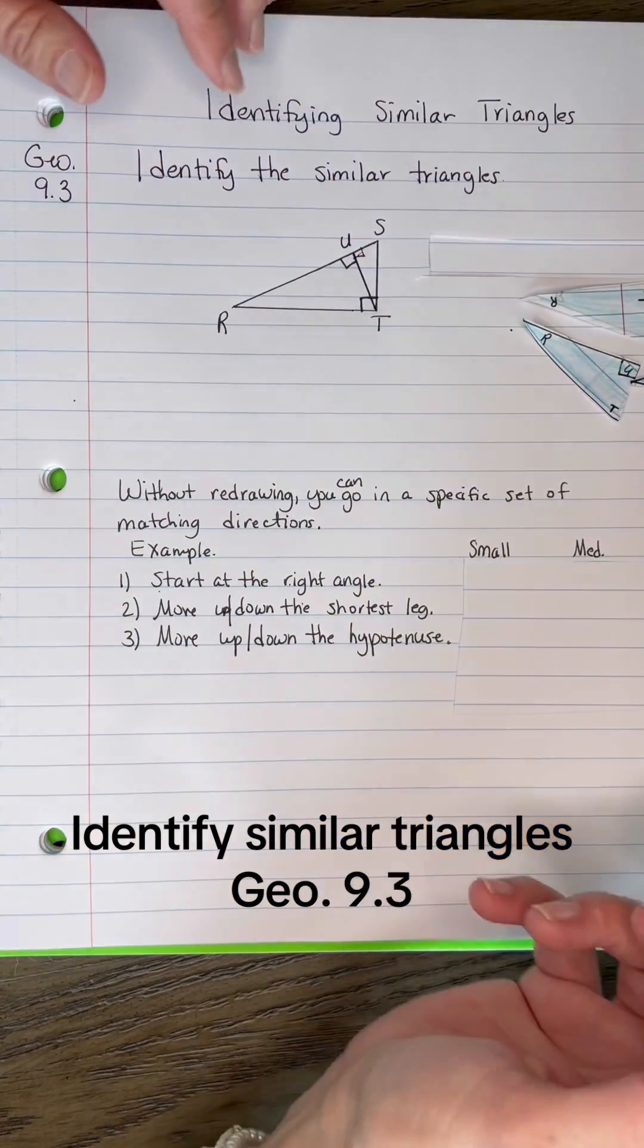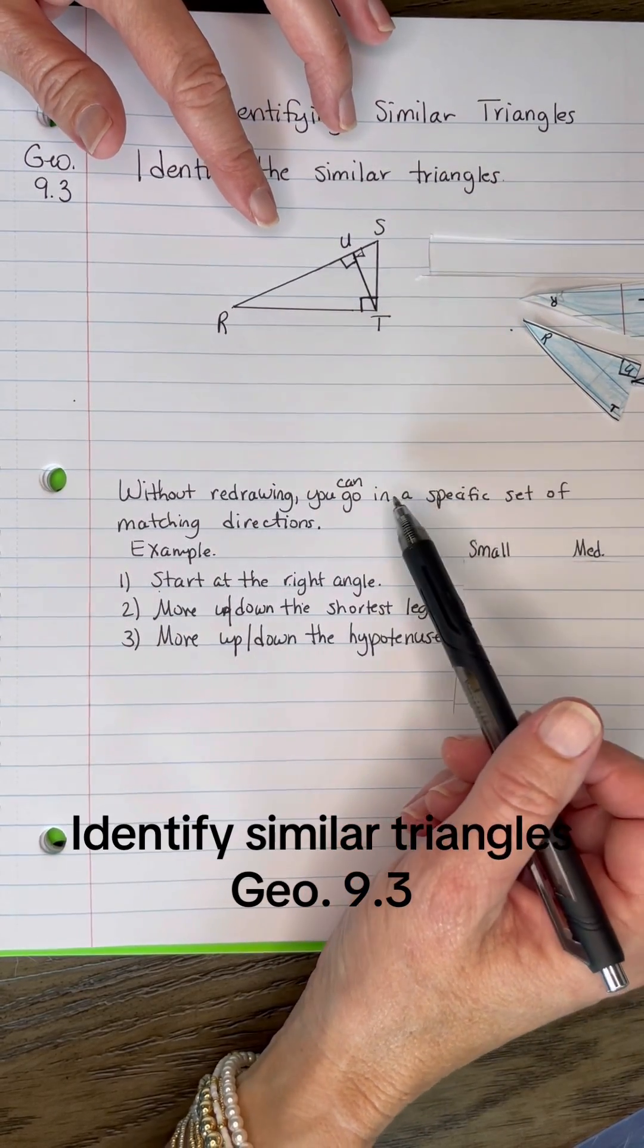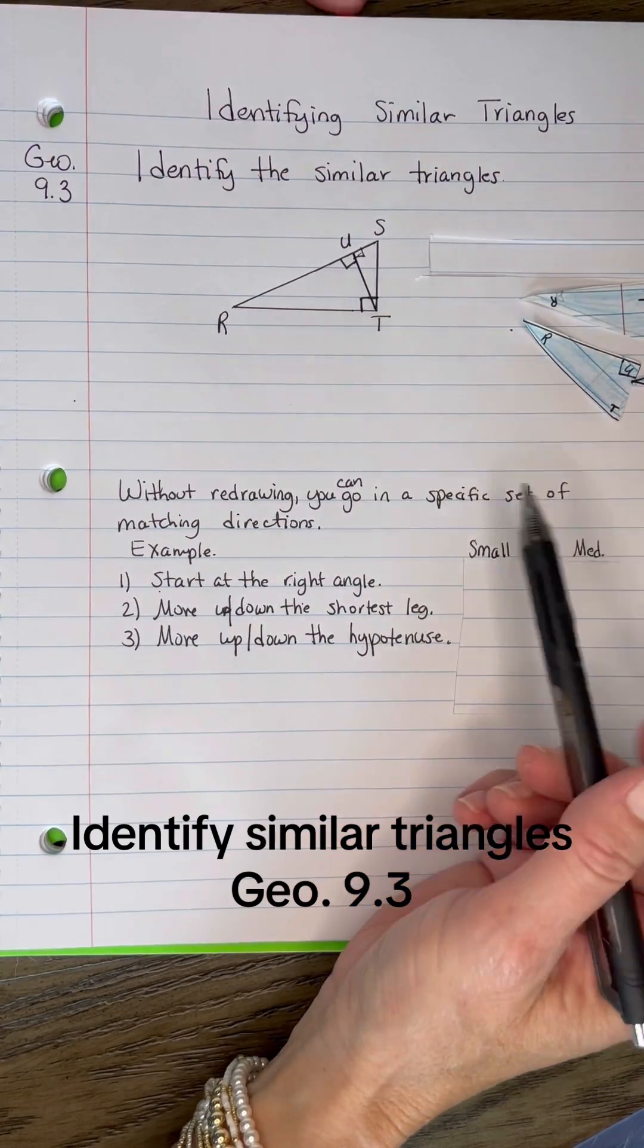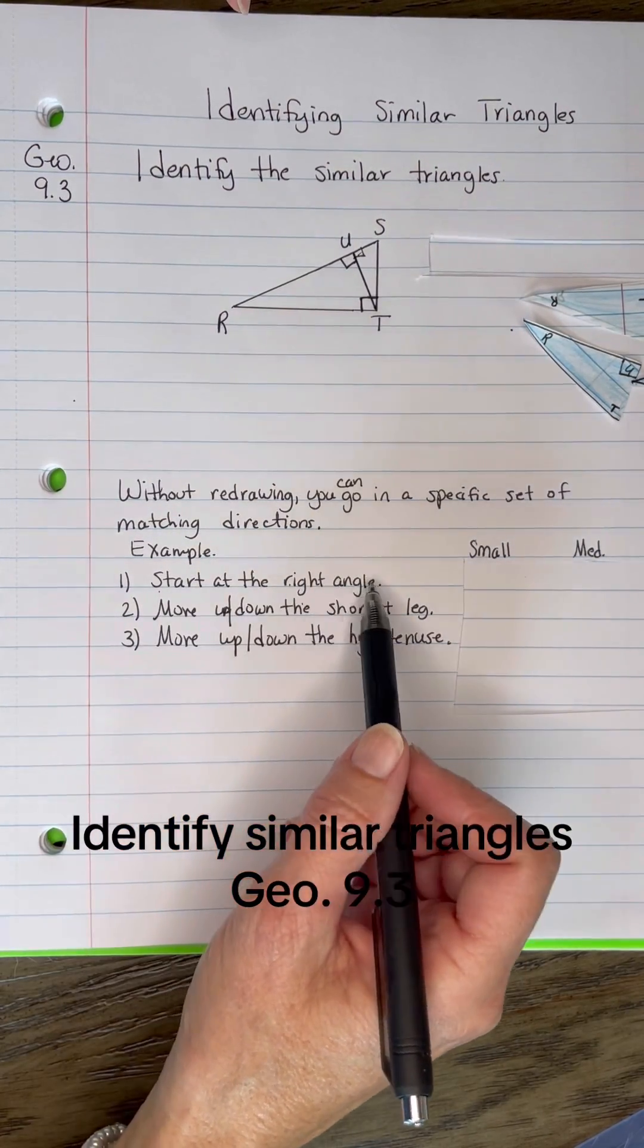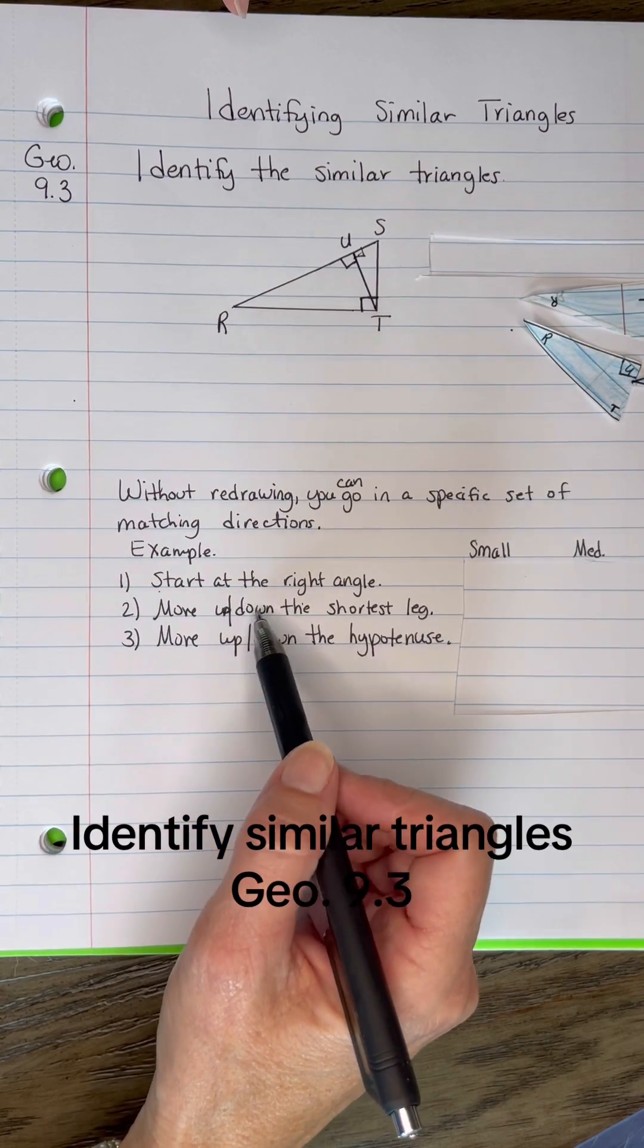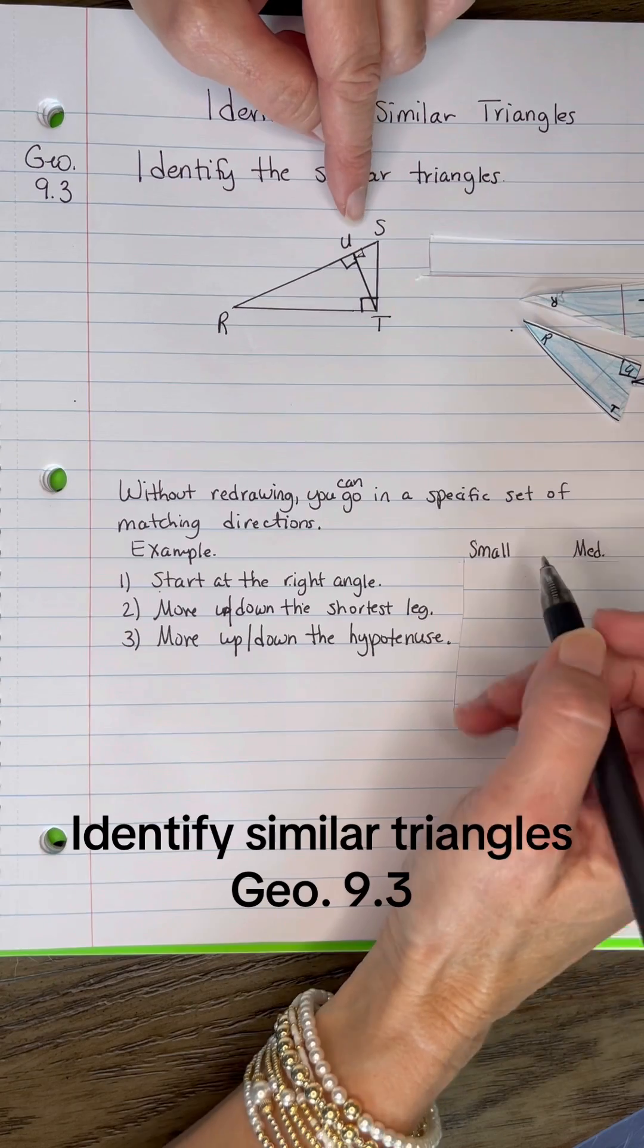So another method is to do it without redrawing it. You just need to set up a specific set of matching directions. Like here's an example. I want to start with a right angle, move up or down the shortest leg, and then move up or down the hypotenuse. So let me show you what I mean.